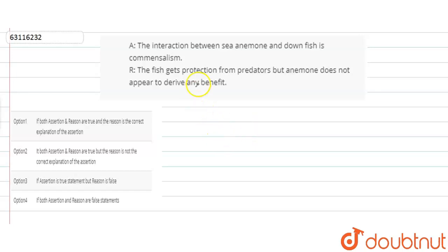Our assertion says that the interaction between sea anemone and clownfish is commensalism. And our reason is that the fish gets protection from predators, but the sea anemone does not appear to derive any benefit.